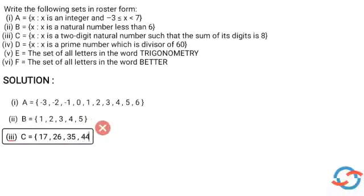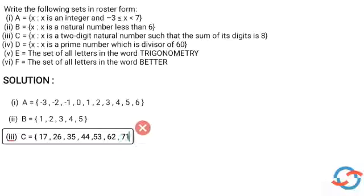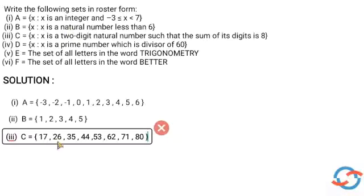Then 44, then 53, then 62, then 71, then 80 because 8 plus 0 is 8. Hence our answer is C is equal to {17, 26, 35, 44, 53, 62, 71, 80}.